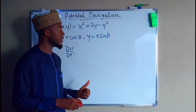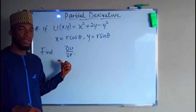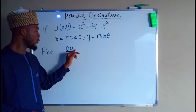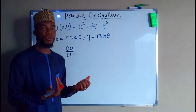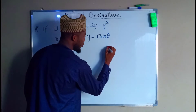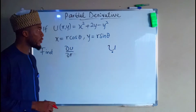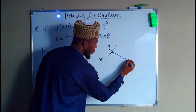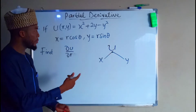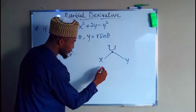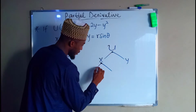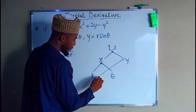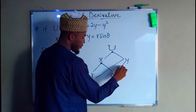The question says find the derivative of u with respect to r, but u is not directly connected with r, so it looks somehow complicated. To find the partial derivative of u with respect to r, we need to figure out the relationship between these functions. We can see that x and y jointly depend on r and theta — x depends on r and theta, and y also depends on r and theta.